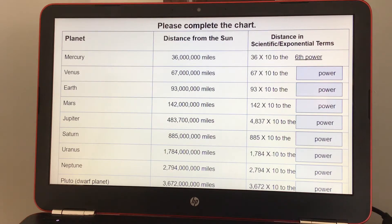The first one shows you Mercury is 36 million miles away from the Sun. And to write that in scientific exponential terms, we're going to say 36 times 10 to the sixth power.